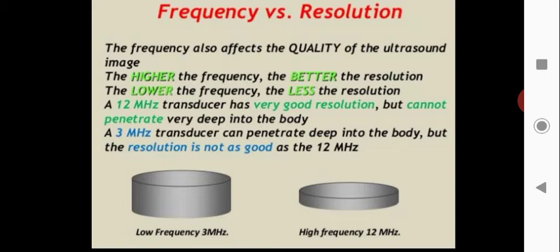Higher frequency gives better resolution — you get a clearer image. Lower frequency gives lesser resolution. At 12 MHz, the transducer has very good resolution but cannot penetrate very deeply into the body. At 3 MHz, the transducer can penetrate deep into the body but the resolution is not as good. Frequency and resolution are directly proportional, but higher frequency cannot penetrate as deeply into the body.